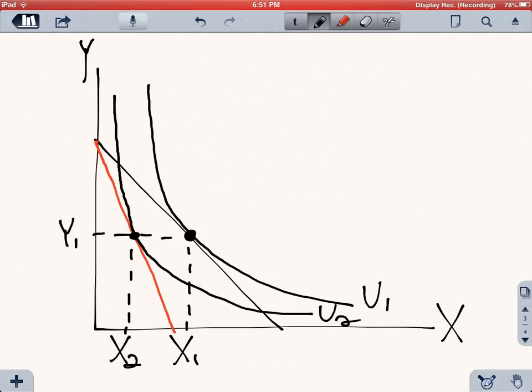And that also tells you how much is going to be the total effect of the increase in price, called the xt. It's going to be the difference between the consumption of x before and after. So it's going to be x2 minus x1, and it's going to be negative because the price of x went up. So the total effect is the total change in the consumption of x when the price of x changes.